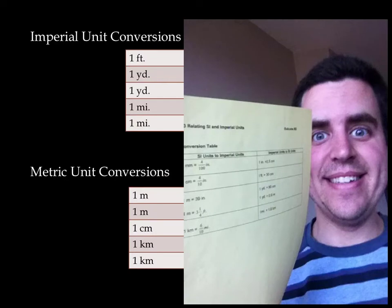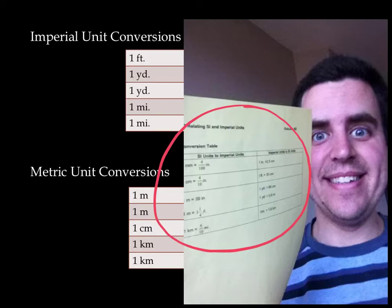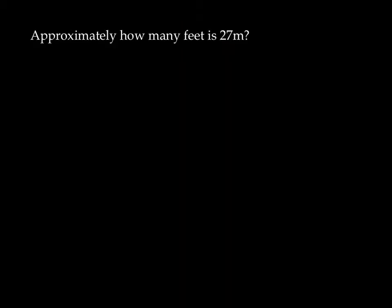So in class you should have received, or you will receive, this beautiful little handout here, which gives us approximate conversions from Imperial to SI. Now these are approximate conversions, they aren't the exact conversions, and there's reasons why we only use approximate conversions, which we'll get into in a bit. You can also find this in your textbook in section 1.3.